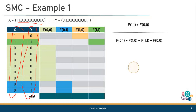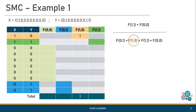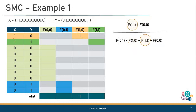Let's talk about f(1,0) first. I see one occurrence of 1,0 in this example, so f(1,0) equals 1. Similarly for f(1,1), I see one occurrence of 1,1, so f(1,1) equals 1 as well.